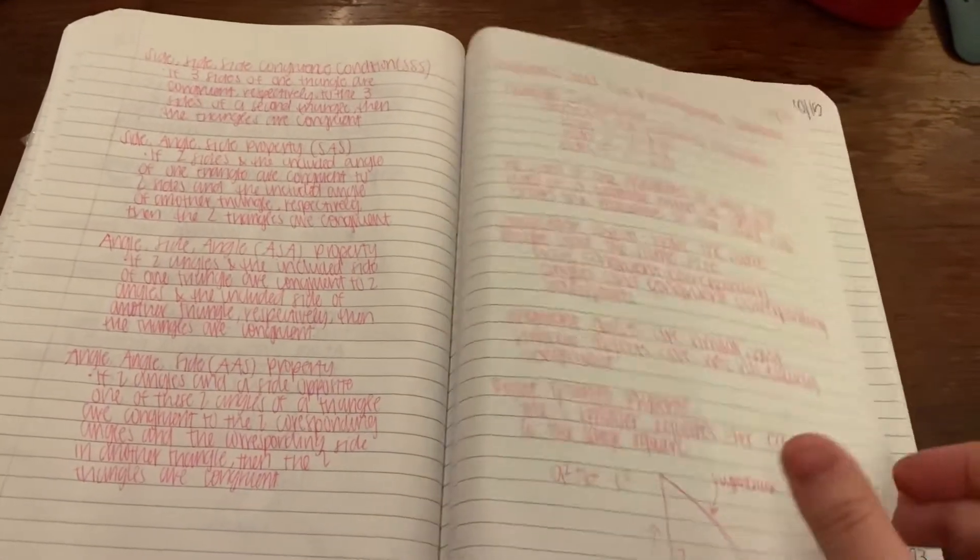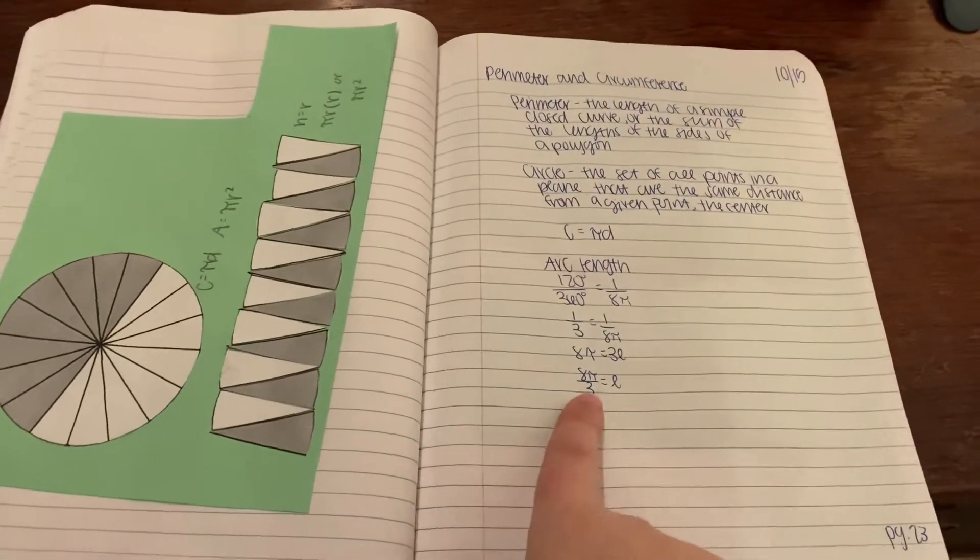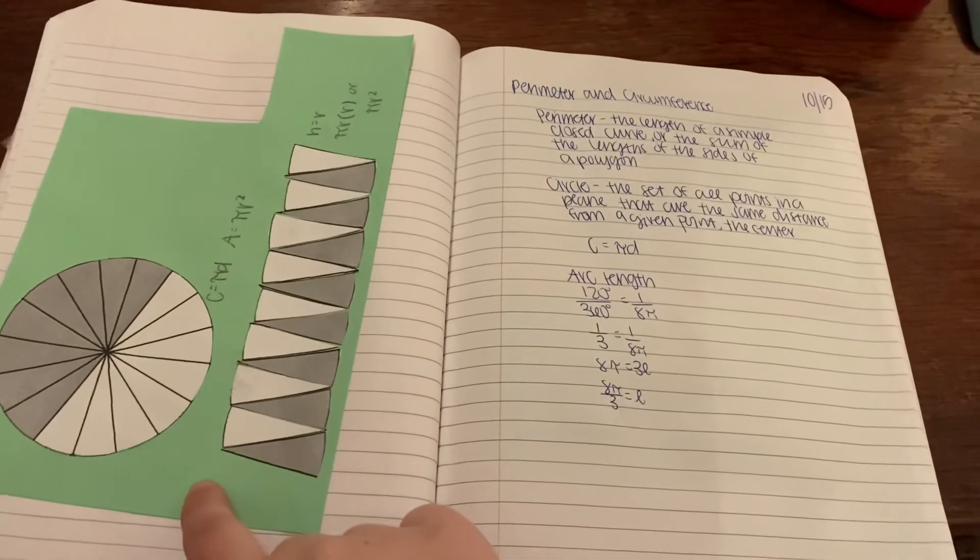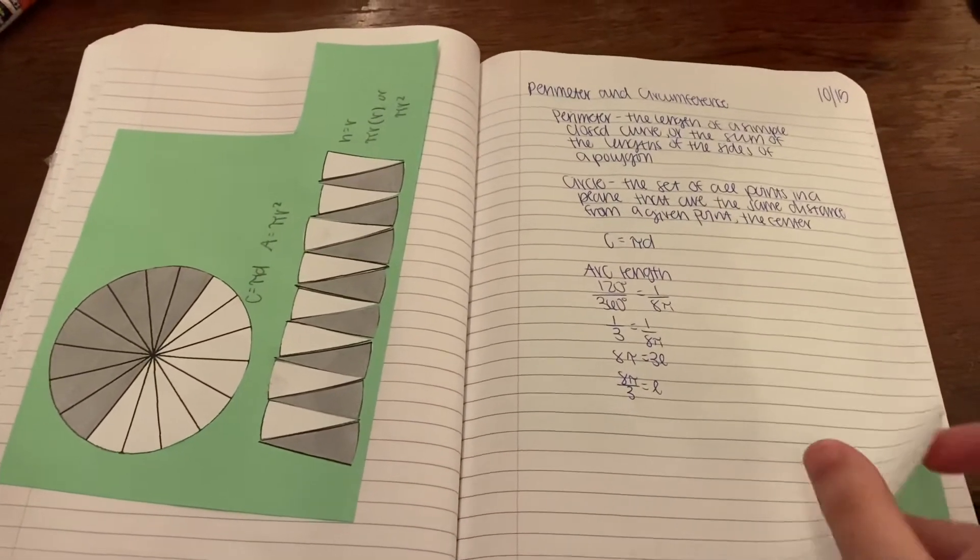And then I have perimeter and circumference, and I have like how do you find the arc length, and then I have the circumference page that we did in class.